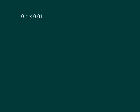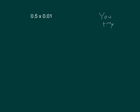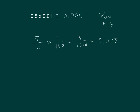Here we have one-tenth times one-hundredth, and then one-tenth times one-tenth times one-hundredth, which equals five-thousandths, which in decimal form is 0.005. So five-tenths times one-hundredth equals five-thousandths.